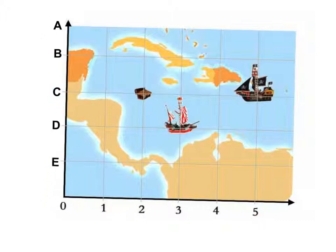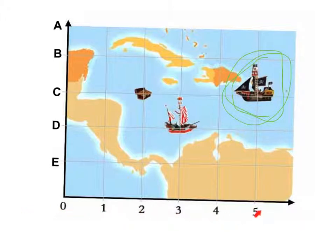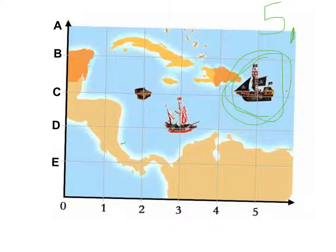If we were going to try and find this pirate ship over here — it looks like a pretty impressive pirate ship — we read along the x-axis first. Which one does it match up with? Five. And where does the pirate ship match up with on the y-axis? It comes over here to C. So the coordinates for this pirate ship on this map is 5C.